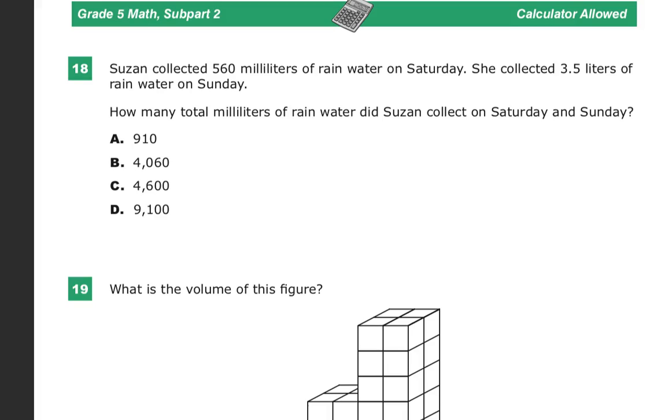This is question number 18 of the grade 5 math practice test for TN Ready. This is subpart 2, so we are allowed to use a calculator here. It may come in handy, it may not. Susan collected 560 milliliters of rainwater on Saturday. She collected 3.5 liters of rainwater on Sunday. How many total milliliters of rain did Susan collect on Saturday and Sunday?